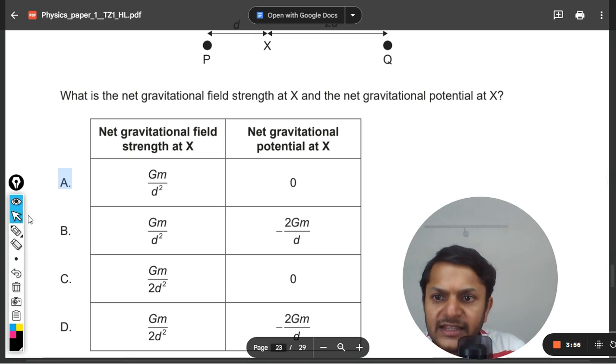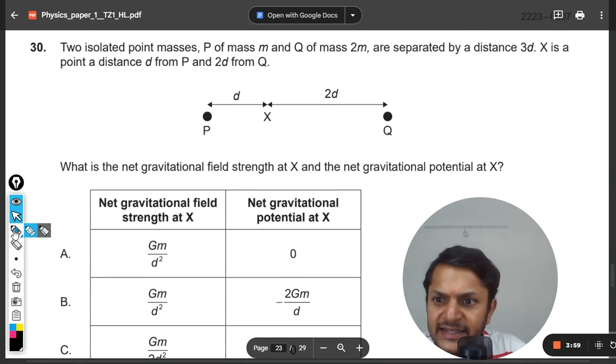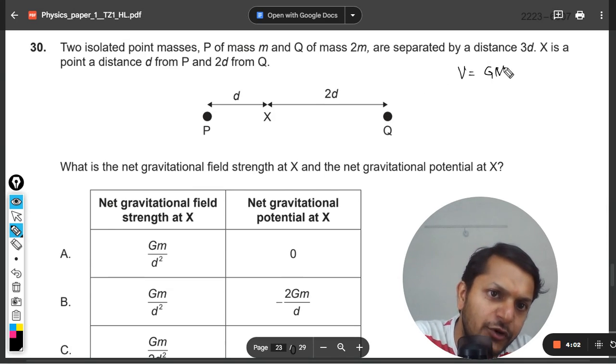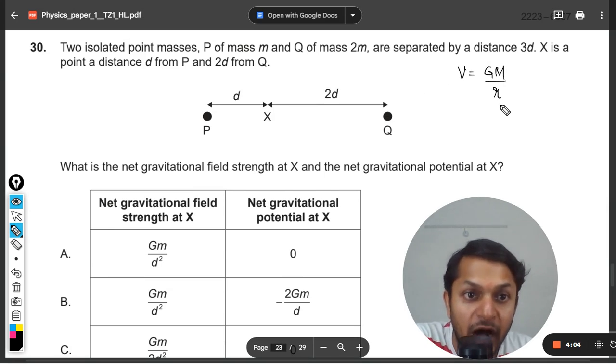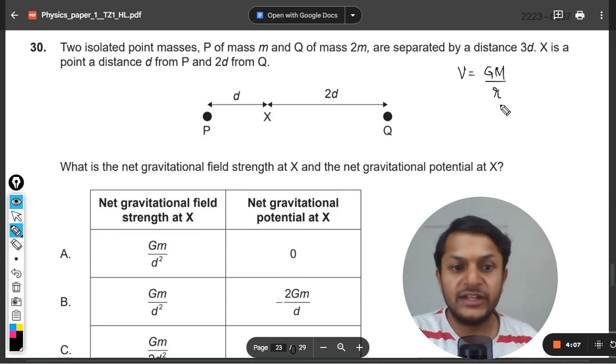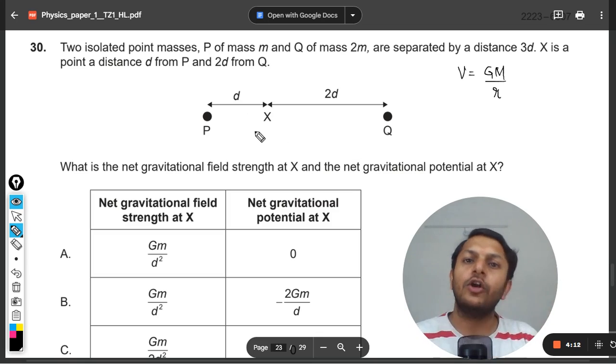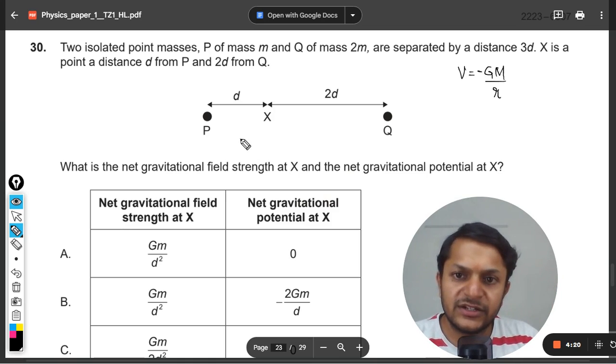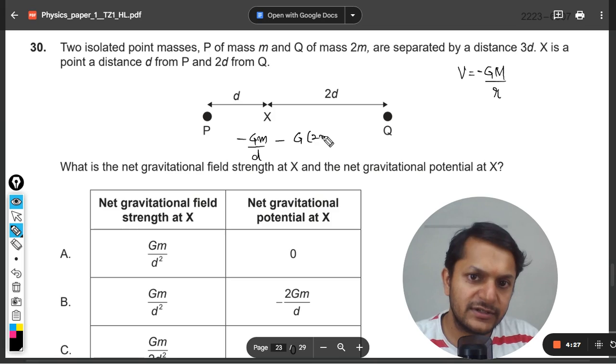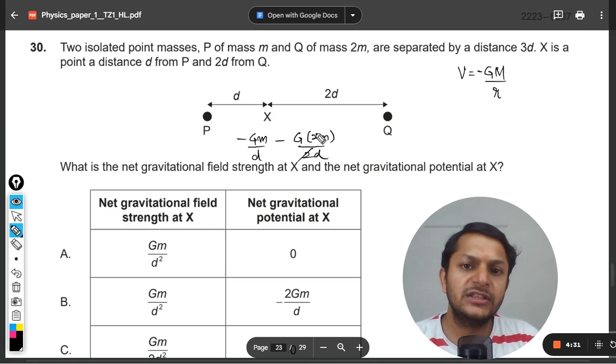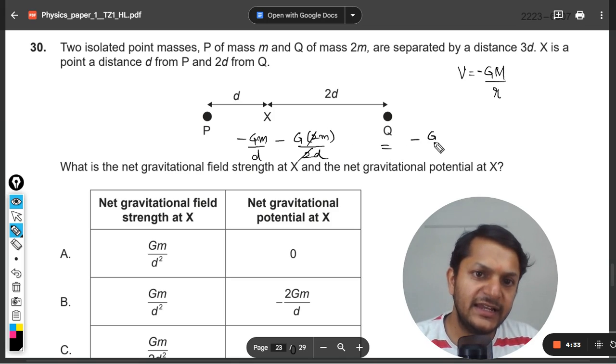So now we want to find the potential at the point X. Let's see. What about the potential? The formula is Gm divided by r, but there is no square there. That is the only difference. And the potential is a scalar quantity, so it will always be added in the case of gravitation and it is always having a negative value. So the potential here will be Gm divided by d due to P, and this will also be negative G 2m divided by 2d. This and this are getting cancelled out. Clearly it is getting added.